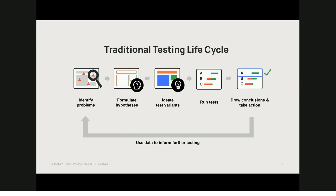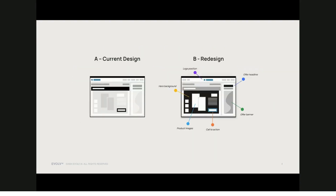Let's consider a classic example of testing a redesign against your current experience. In this redesign, we might be changing things like offer headline, a header image, background color, primary call-to-action. Before we run the test, we need to determine how long it needs to run in order to evaluate the results for statistical significance. To do this, we would use minimal detectable effect size, or MDE, to determine the number of samples we need and ultimately how long it would take to collect those samples. However, the MDE we choose can leave a blind spot for uplifts below the chosen effect size.